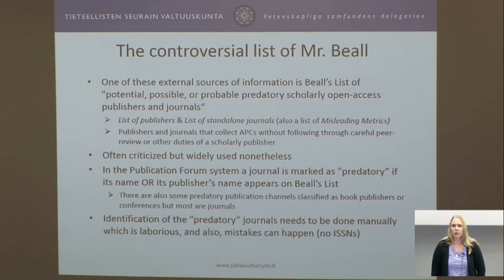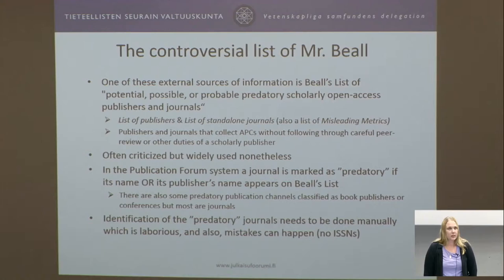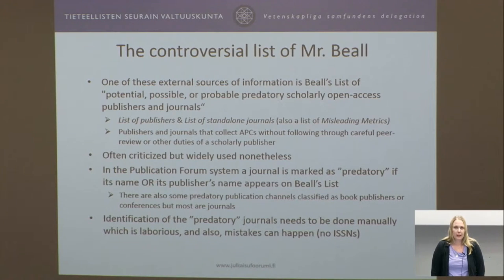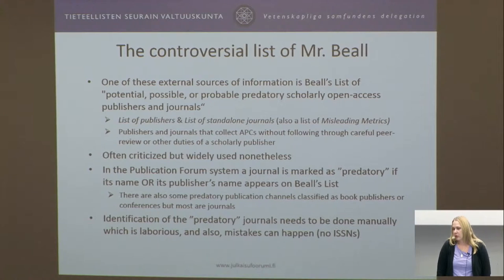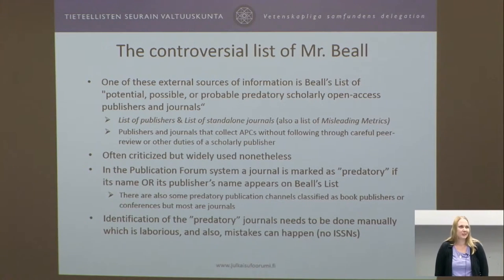Beale is often criticised because it's generally known that he favours traditional big publishers and is doubtful about the quality of open access journals. But nonetheless, his list is quite well known and used. In our system, we mark a journal as predatory if the journal's name or the publisher's name appears on Beale's list. Most of these are journals, but also some publishers and conferences. We have to do this manually by comparing names because Beale doesn't give ISSN numbers, so we check one by one. I would advise you to also check Beale's list directly for the most up-to-date information.